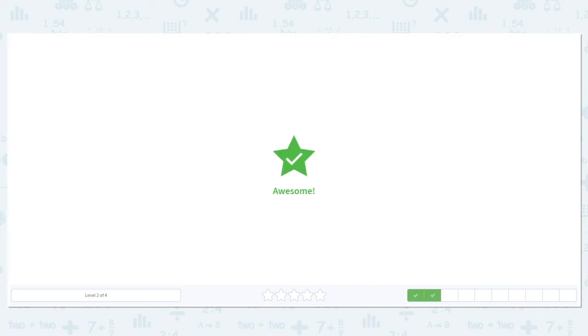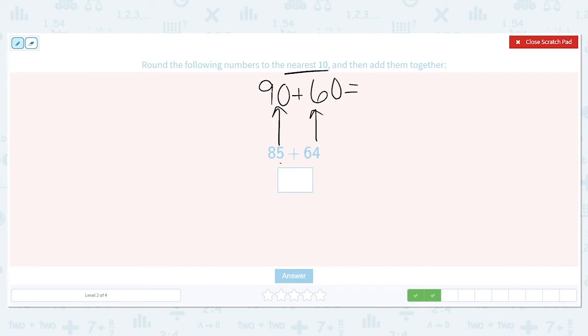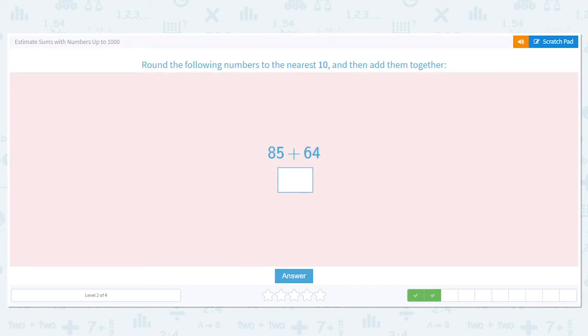Next up we have 85 and 64. Again, we're rounding to the nearest ten. What does 85 round to? It rounds to 90. This 5 tells me to bump it up to 90. How about 64? Does it go down to 60 or up to 70? 60. So now we can add. 0 plus 0 is 0, 9 plus 6 is 15. So that means my estimate is 150.